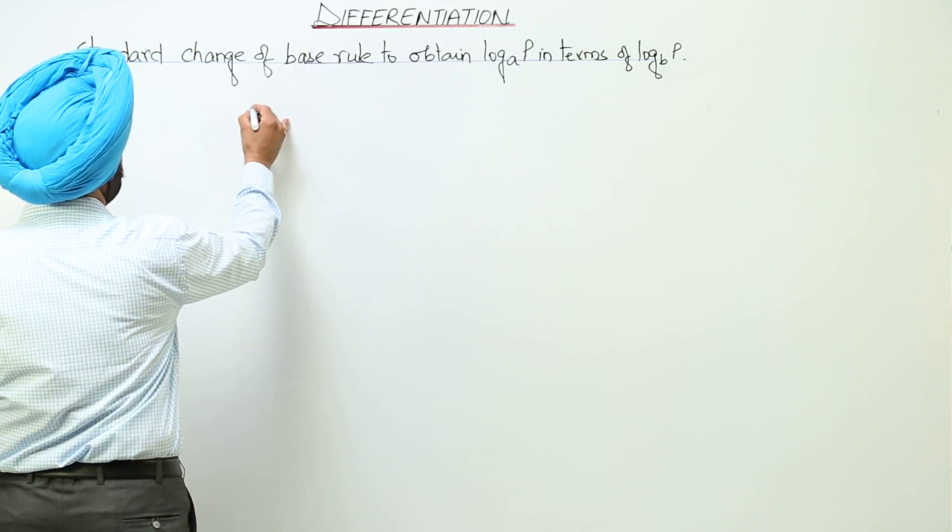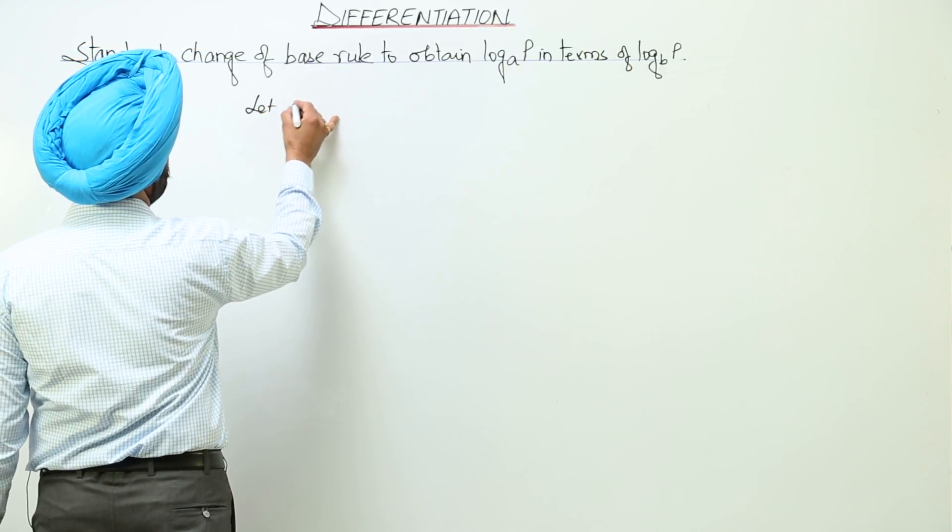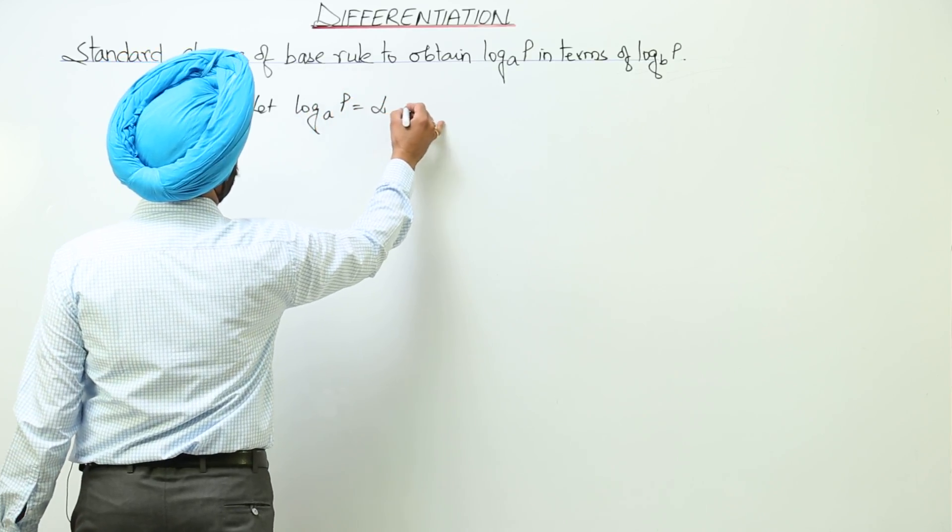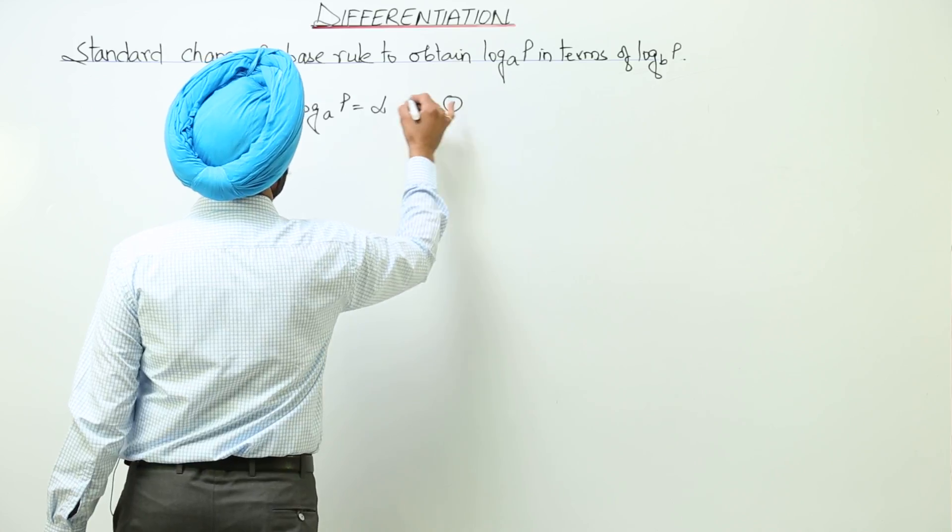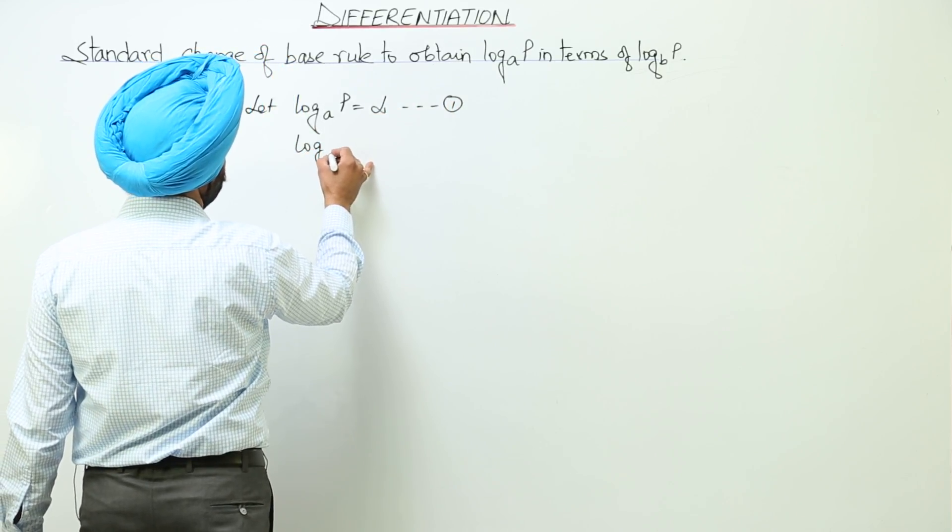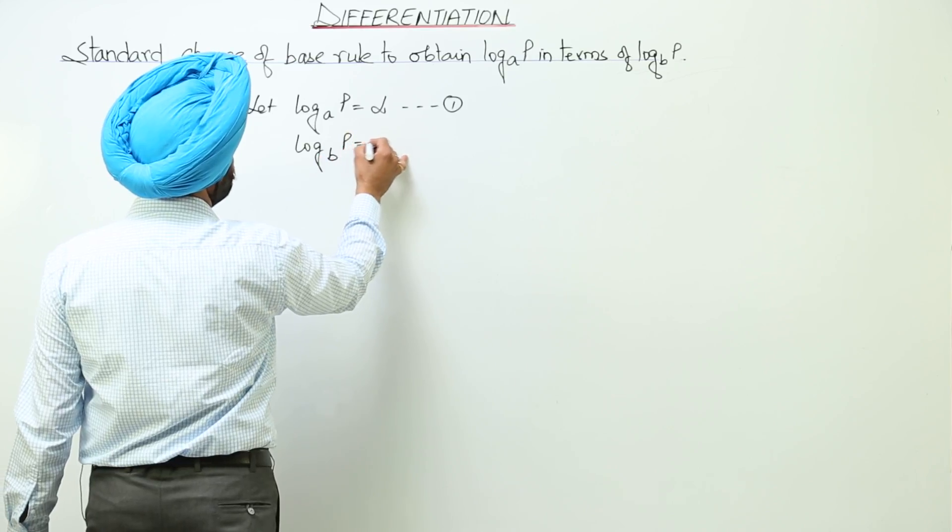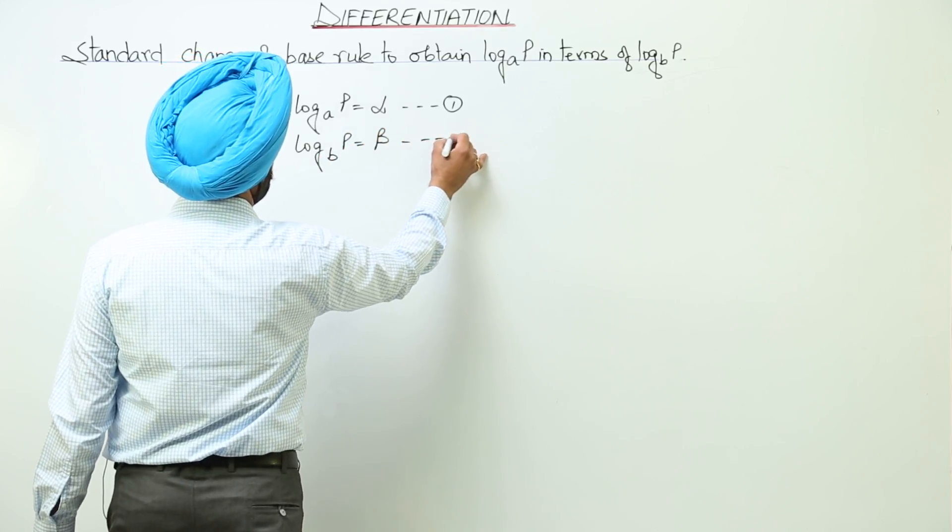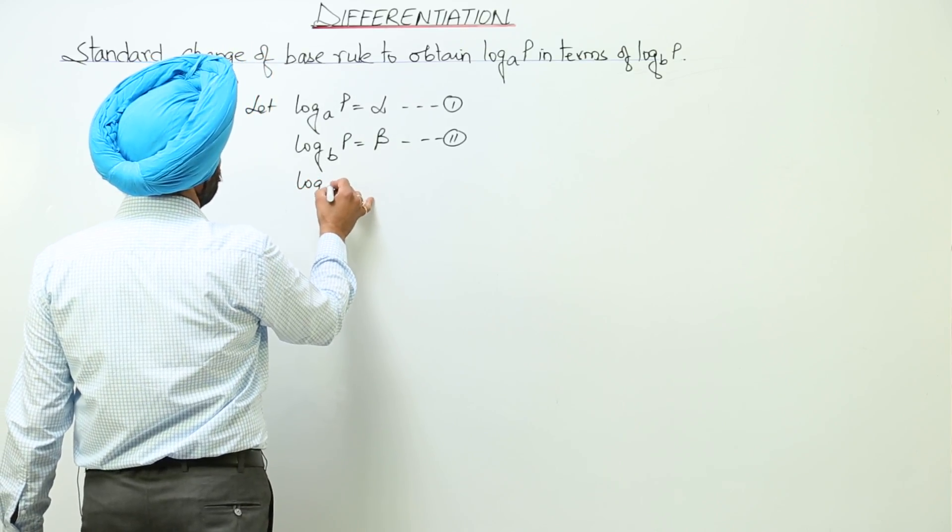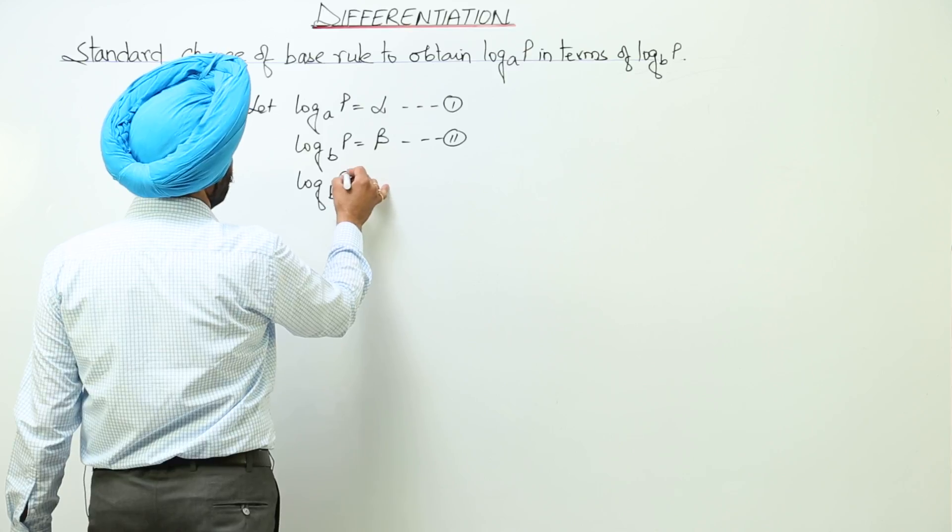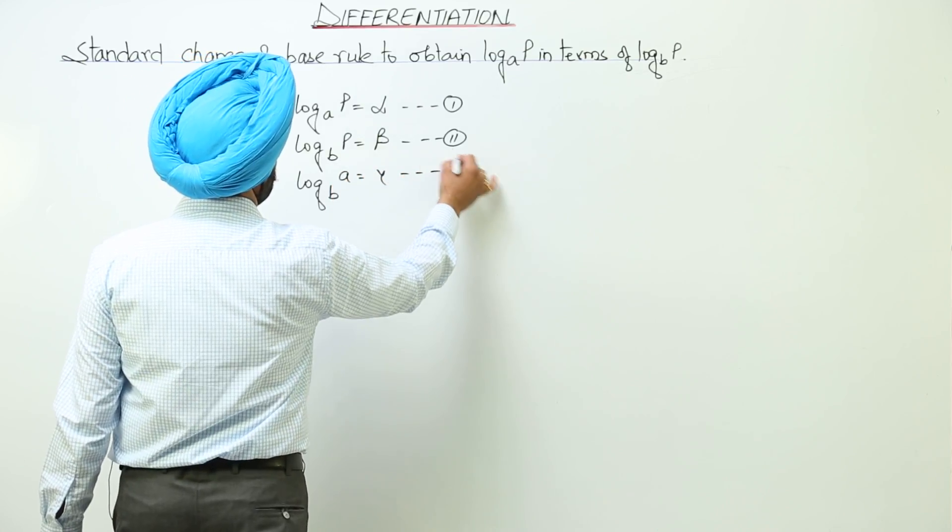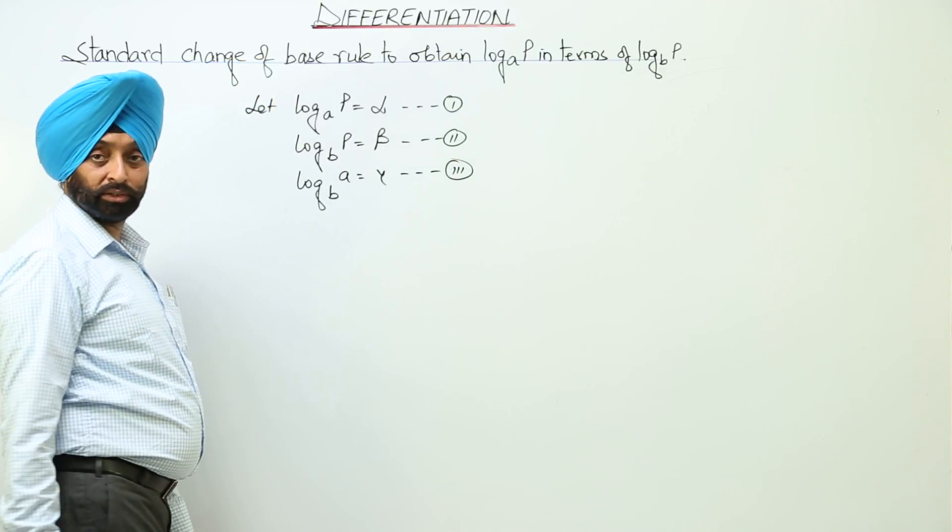Now let log with base a of p equals alpha. Let this be equation 1. Log with base b of p equals beta. Let this be equation 2. And log with base b of a equals gamma. Let this be equation 3.